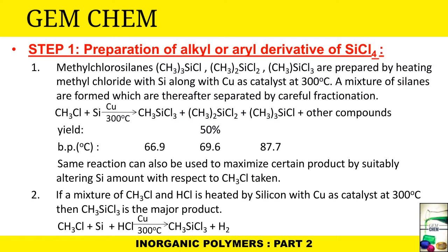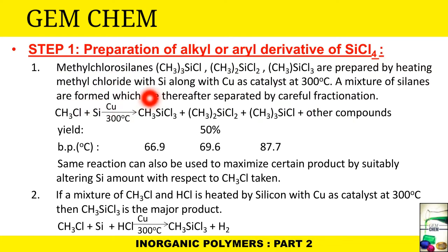The first step of preparation is the preparation of alkyl or aryl derivatives of SiCl4. Methyl chlorosilanes are prepared by heating methyl chloride with silicon, using copper as a catalyst at 300°C. A mixture of silanes is formed which is thereafter separated by careful fractionation. As we can see from this reaction, the boiling points of each product are different, so we can easily separate them out.